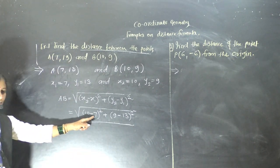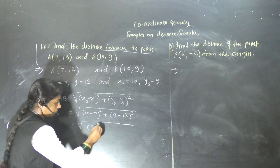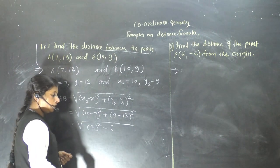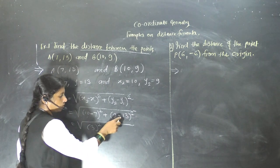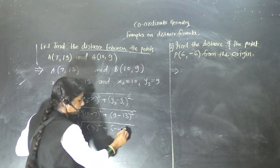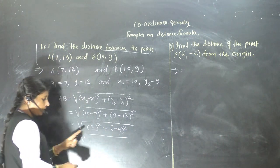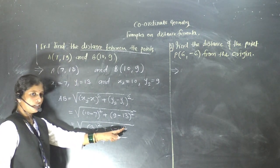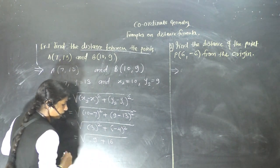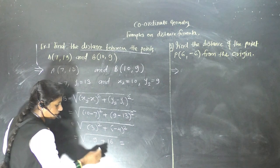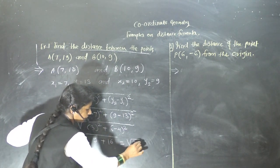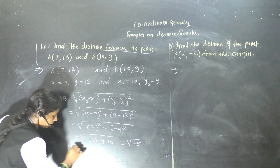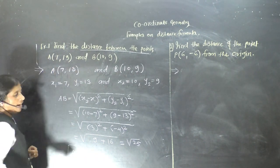10 minus 7 equals 3, so 3² = 9. And 9 minus 13 = -4, so (-4)² = 16. Every negative number squared is always positive. So we get √(9 + 16) = √25 = 5. Therefore AB equals 5 units. This is the distance between point A and B.